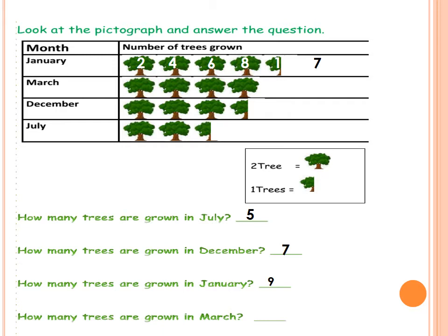And the last question: how many trees are grown in March? Where is March? It's the second one. Let's count together: 2, 4, 6, 8. Now we have 8 trees. And this is the pictograph.